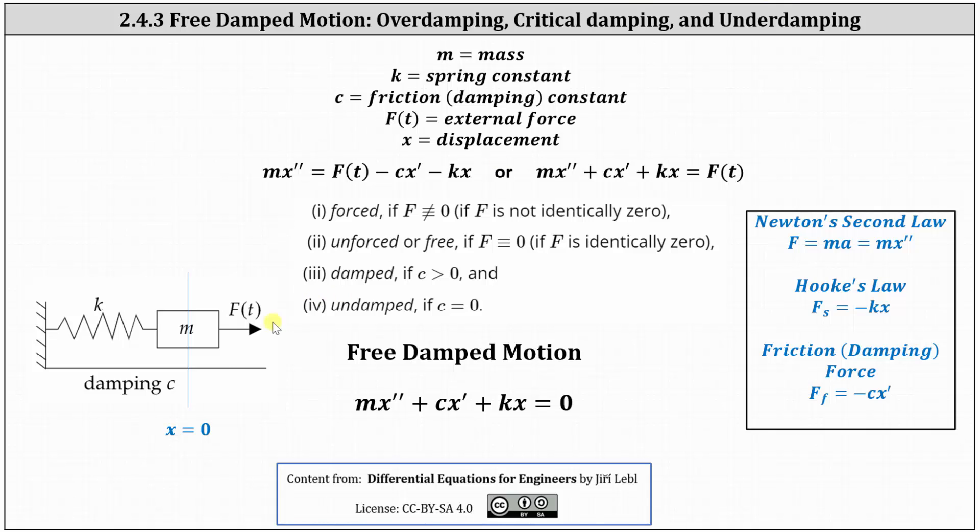We know from previous lessons, if we have a mass attached to a spring as shown here on the left, where m is the mass, k is the spring constant, c is the friction or damping constant, big F of t is an external force, and x is displacement,